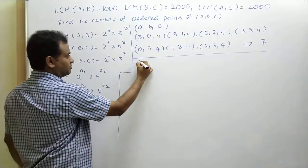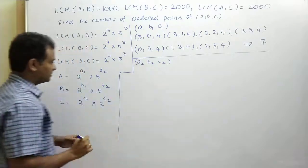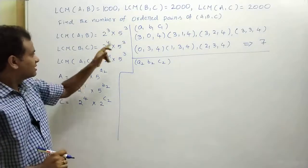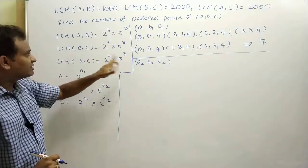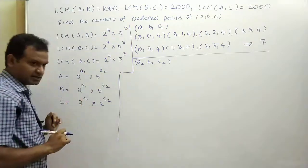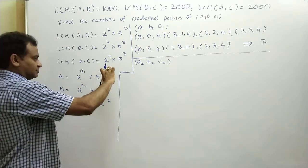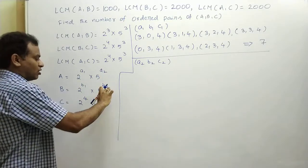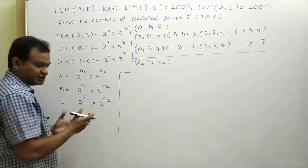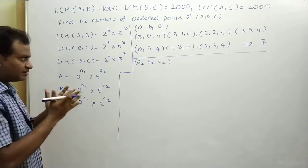Similarly, we find ordered pairs for (a2, b2, c2). From the question, 5 takes maximum power 3 in all three LCMs, meaning at least two of a2, b2, c2 must equal 3. The possibilities are: a2 and b2 both equal 3, or b2 and c2 both equal 3, or a2 and c2 both equal 3.